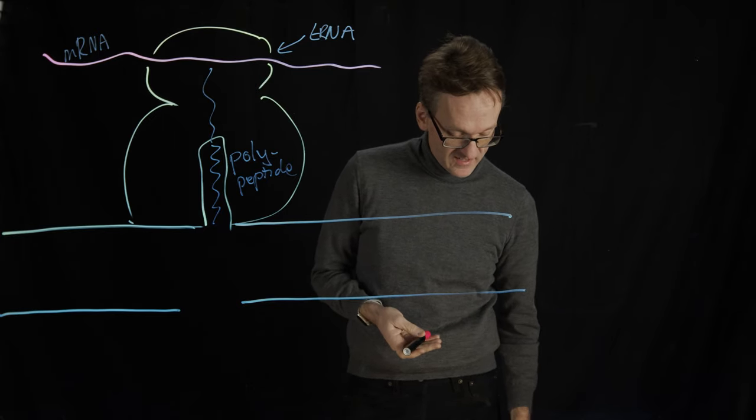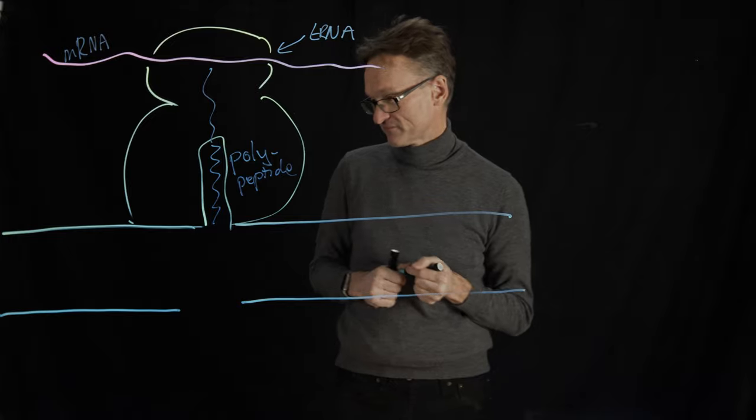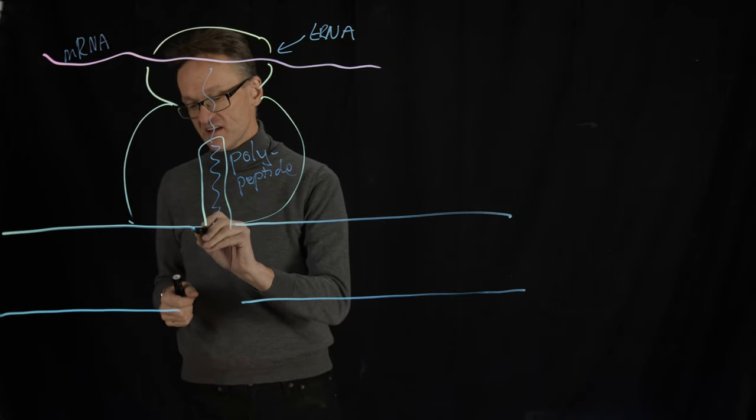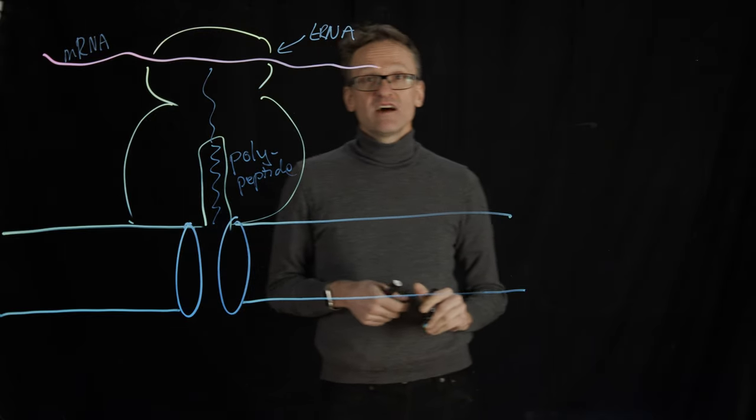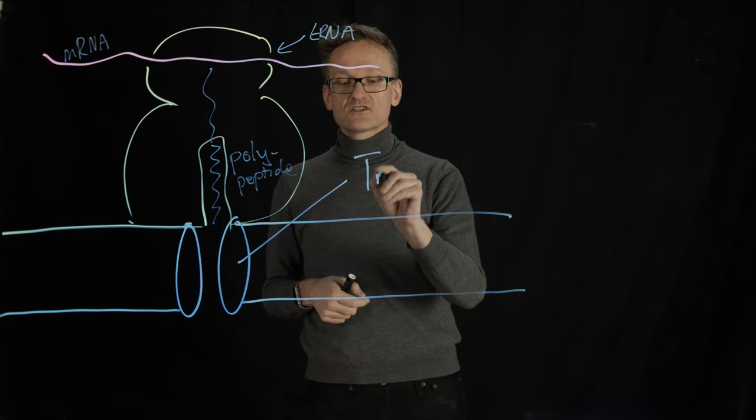And what we're going to need is a, you probably guessed it, a protein. There is a protein here that at the time we might not have known anything about it. And that's called a translocon.